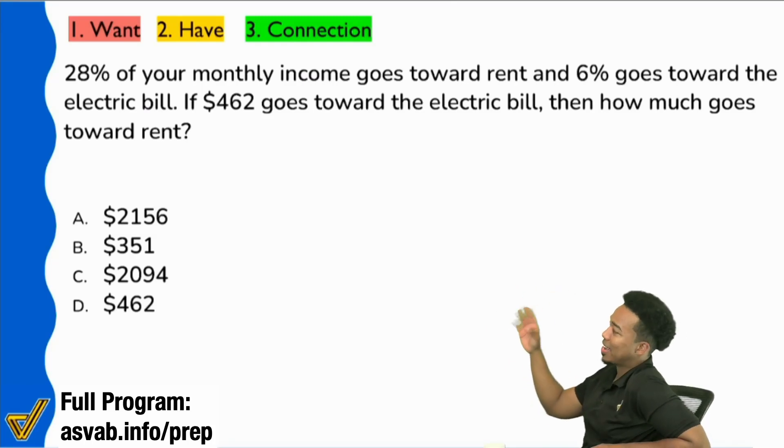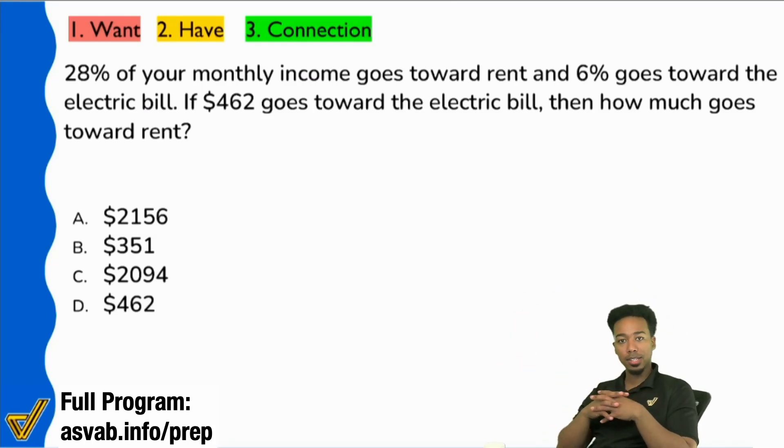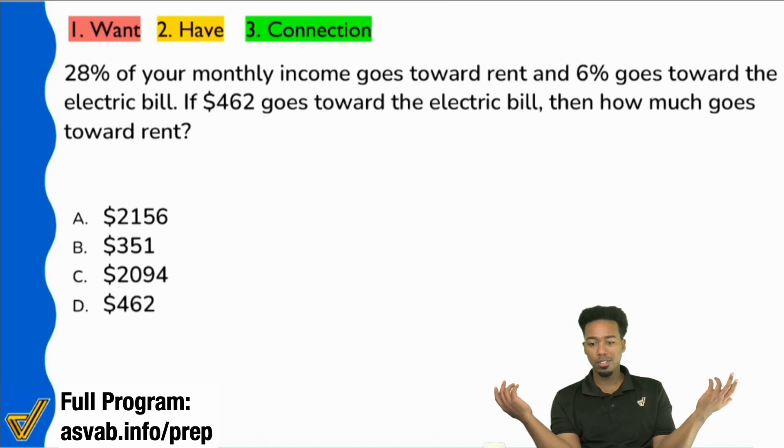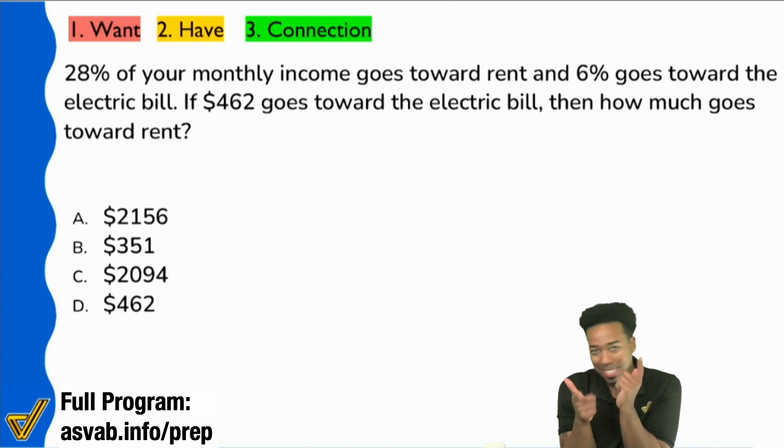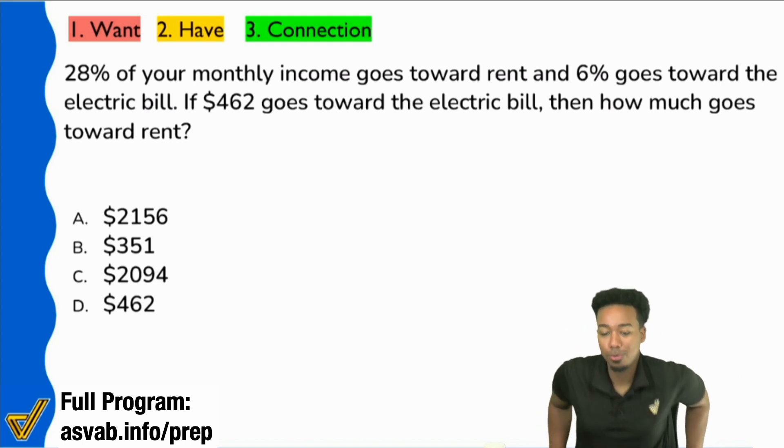First of all, has anybody ever seen a problem like this before where they don't give you what the whole thing is? They tell you this percent is for this, this percent is for that, find the information, but they never give you the original. It's like you have the formula percent times original equals the result, but you don't have the original. You've seen problems like that? Okay, cool.